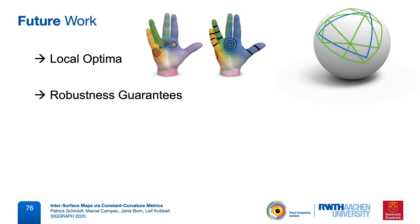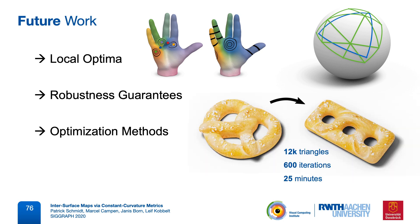And lastly, we were able to adapt an optimization algorithm from the flat to the general topology setting. But it might take many iterations. In this example, with 12,000 input triangles, it took 600 iterations, which is about 25 minutes in our prototype implementation. So both taking larger steps in each iteration as well as reducing the per-iteration cost will be of practical interest in the future.